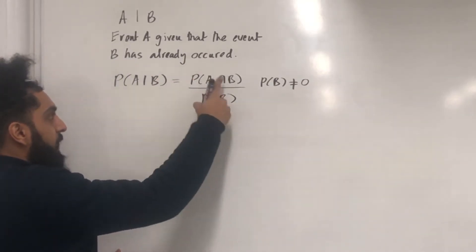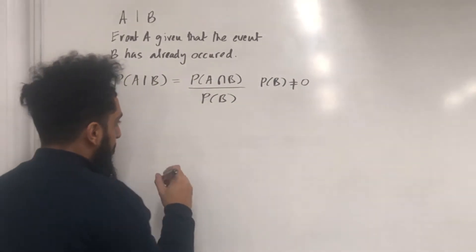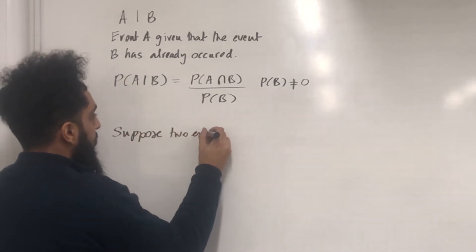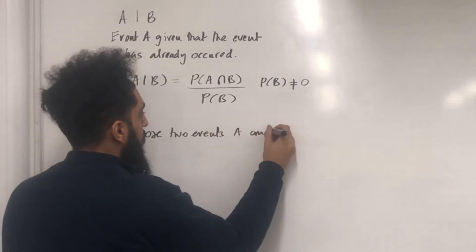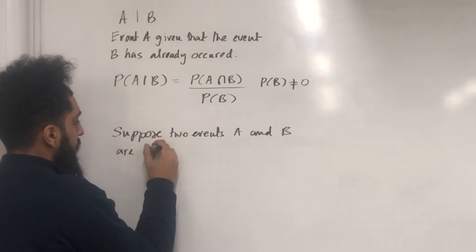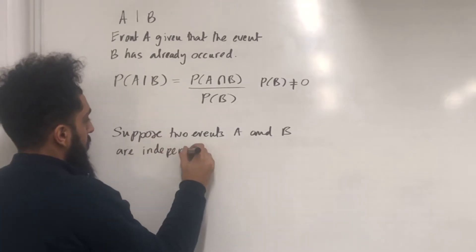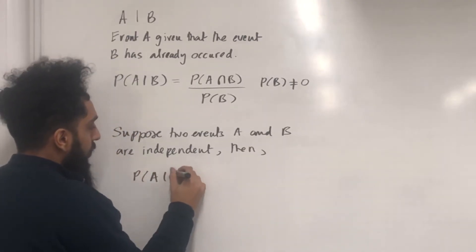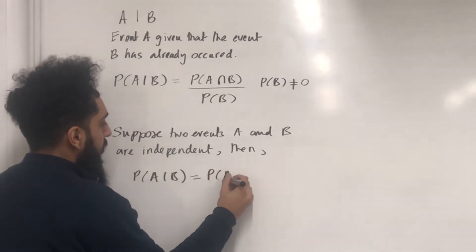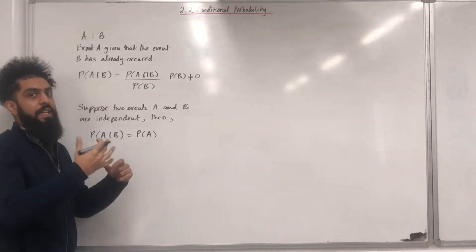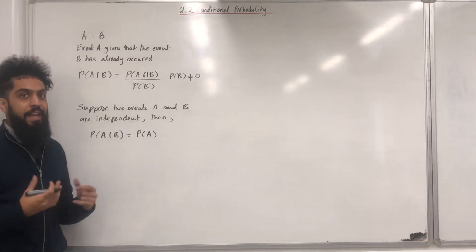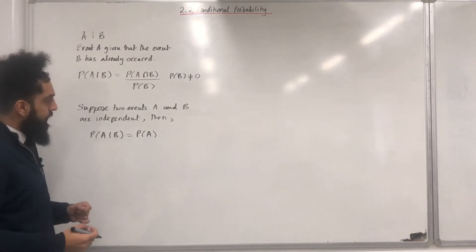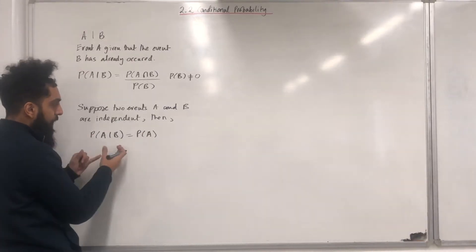This is the conditional probability formula. Suppose two events A and B are independent. Then, probability A given B is equal to probability A. So, given that B has already occurred, the probability of A happening is not affected by B happening because A and B are independent events. We can actually prove this statement.